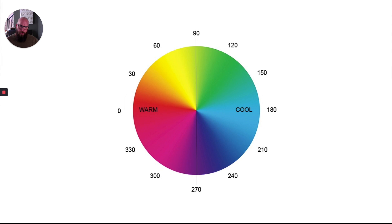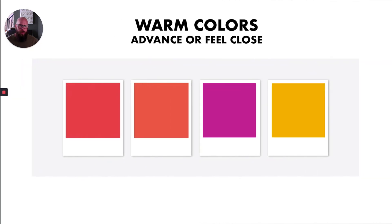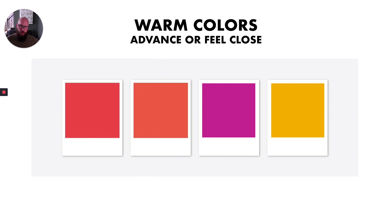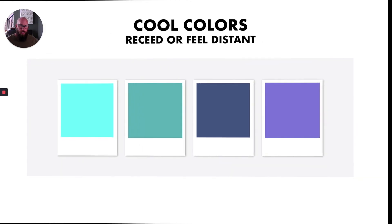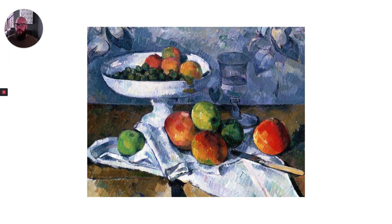Let's look at how that applies to the color wheel we were using before. Dividing our color wheel along this axis, we can separate it into warm and cool colors. Understanding the difference is super helpful when dealing with things like temperature in science content. It's also helpful to know that warm colors tend to advance or feel close to us, while cool colors tend to recede. Take a look at this work by Cézanne — those warm fruits punch forward when contrasted with the cool values in the background.